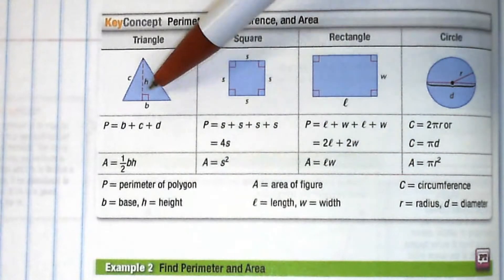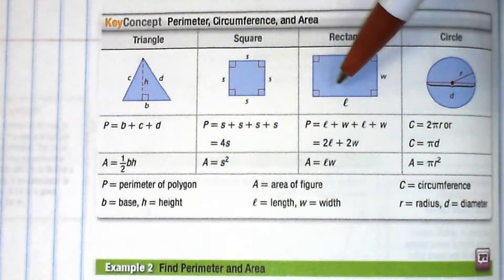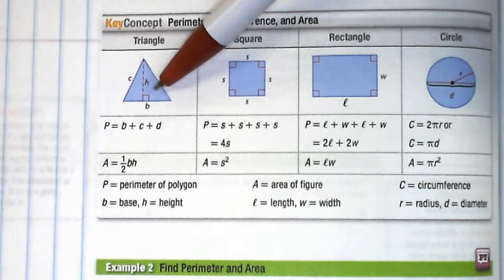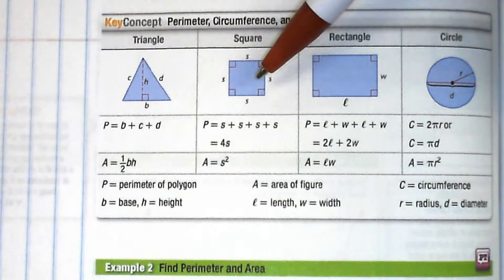We find this the same way - they use different letters to notate it but we find this the same way we find the area of a rectangle, just divide by two or multiply by a half, whatever is easier for you to think of.